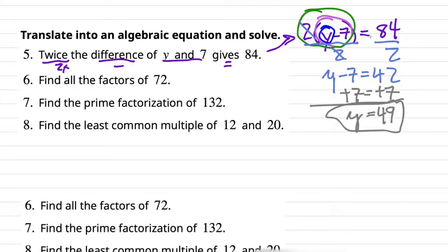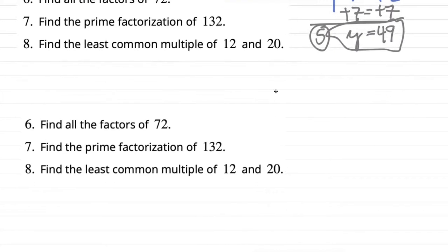So we did the translating: 2 times the quantity (y minus 7) equals 84, and we solved it: y equals 49.